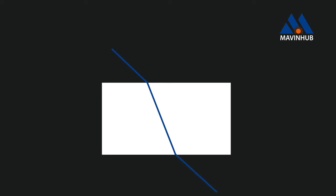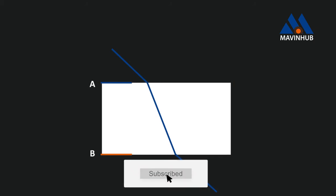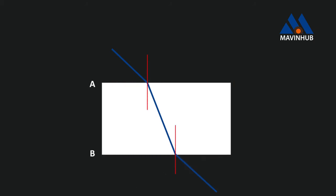This is how it is often represented. When a light ray passes through a rectangular slab, it is incident on two surfaces that are in contact with air. Let's call the first surface A and the second surface B. The light ray is incident on surface A as well as B. As a result, two refractions occur. Let's draw the vertical lines at the points where the light is incident on the two surfaces. These two lines are called normals.